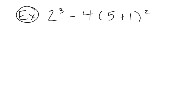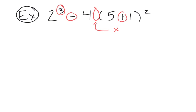In our last question we have 2³ subtract 4(5 + 1)². Let's identify all the operations present: we have exponents, subtraction, a number in front of brackets which is multiplication, addition within the brackets, and an exponent outside the brackets. Let's remind ourselves of BEDMAS before evaluating.